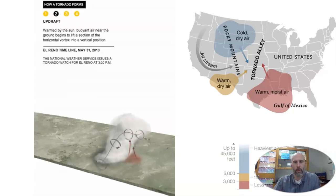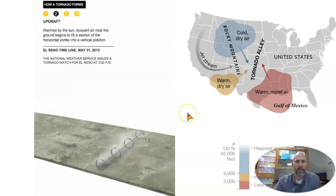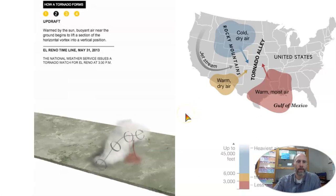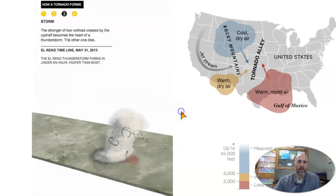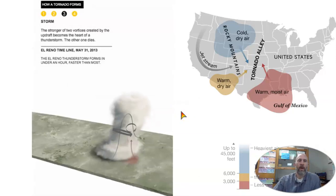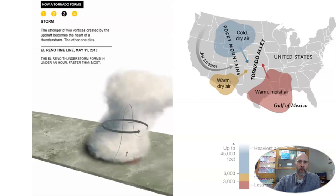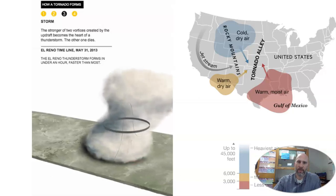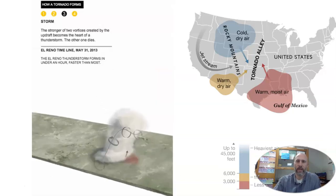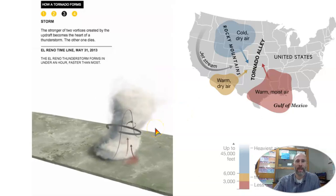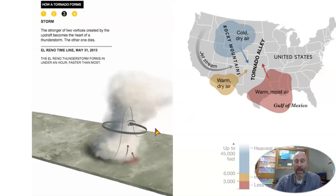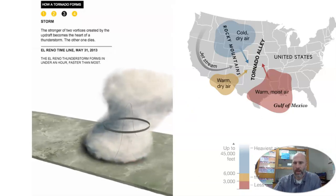Warm air is going to rise, and what that does is cause this belt of rolling air — that updraft lifts the rolling air vertically. Eventually you get the formation of a storm. To get a tornado, you have to have all of these ingredients take place. If something limits one of these factors, you're not going to get a tornado.